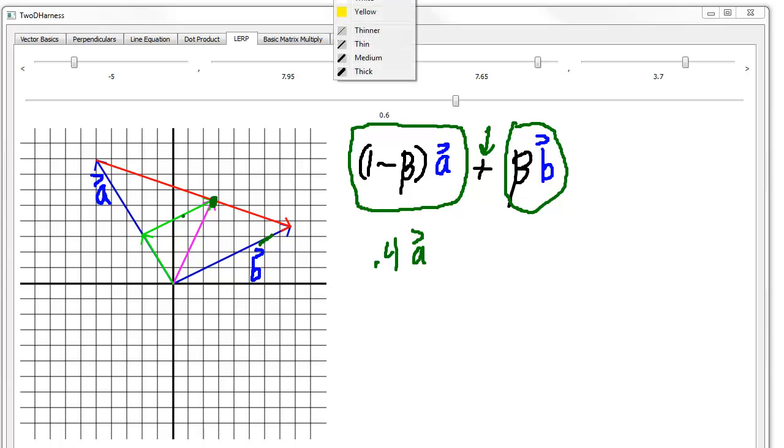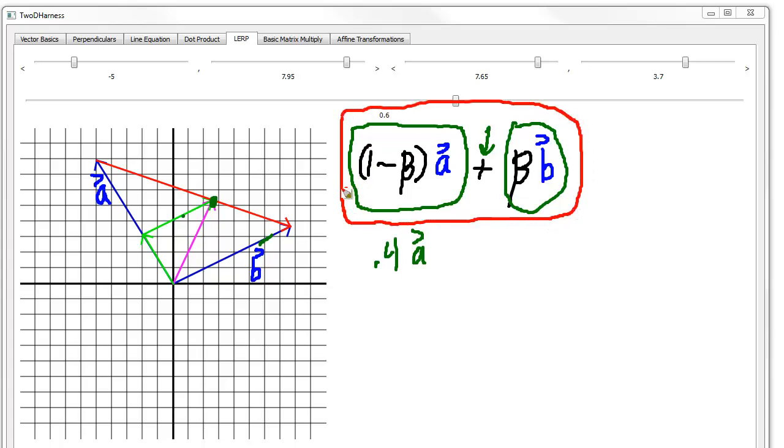The whole equation returns this pink vector. But don't make it any harder than it is. We're just interpolating. Well, that's a lot of syllables just to say, hey, we're going to walk a percentage of the way down this red vector. And the way we do it is just a combination of the two input vectors.